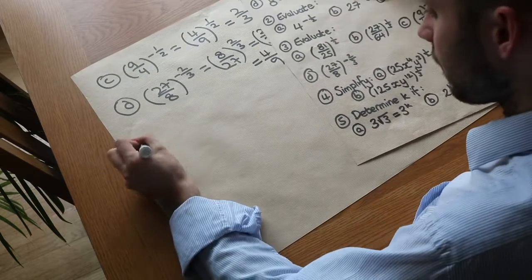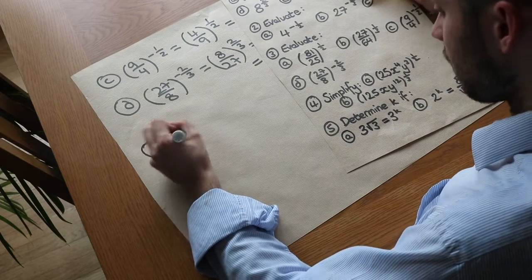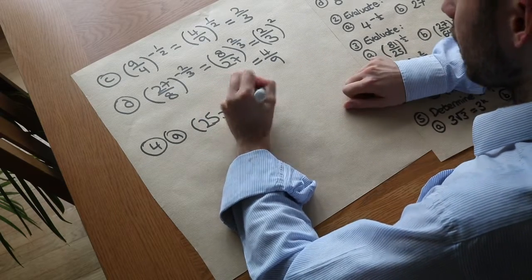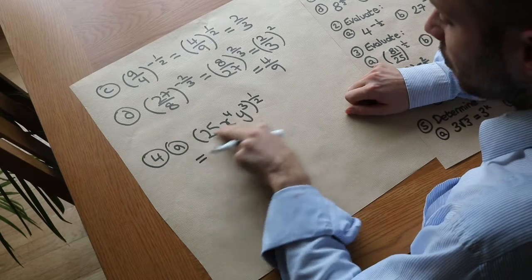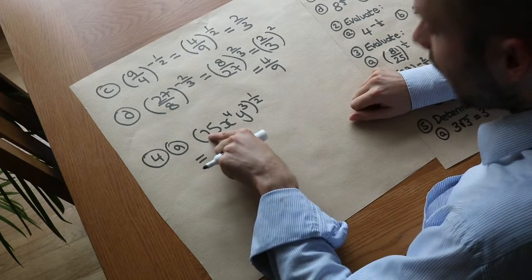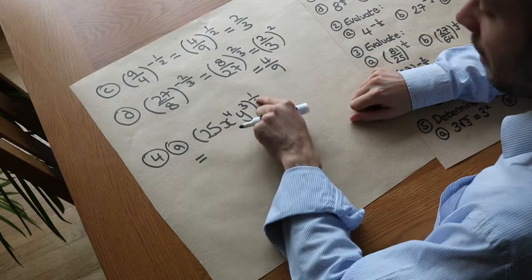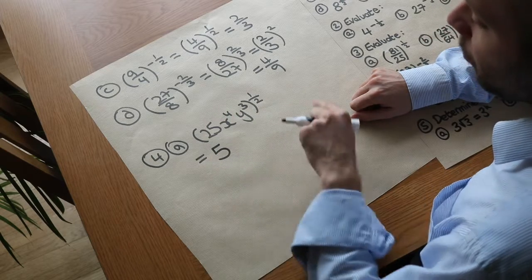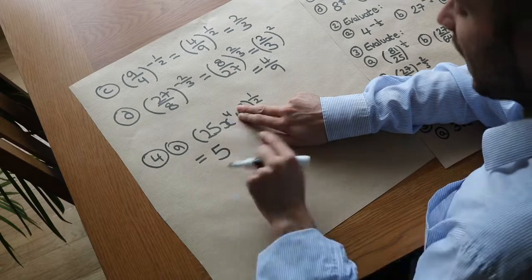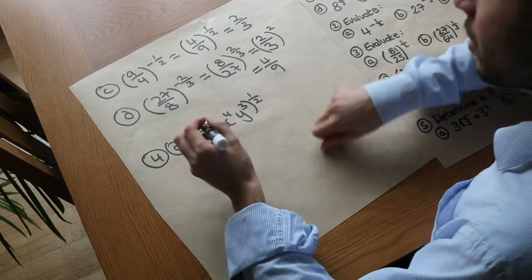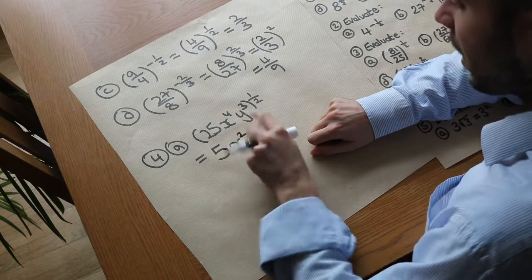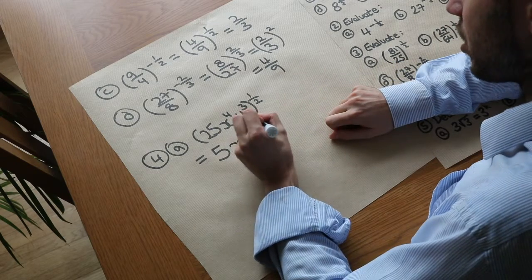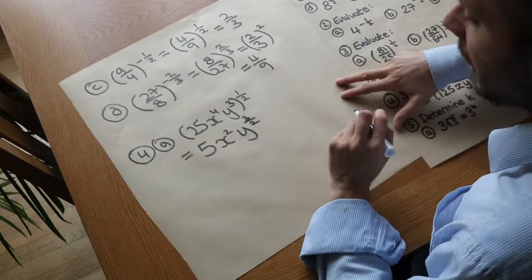Now let's simplify algebraic expressions. For (25x⁴y³) to the power of a half: we raise each factor to that power. 25 to the half is the square root of 25, which is 5. For x⁴ to the half, we multiply powers: 4 times a half is 2, giving x squared. For y³ to the half, we multiply: 3 times a half is 3 over 2. We prefer fractions in algebra, so the answer is 5x²y^(3/2).